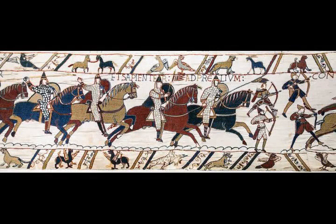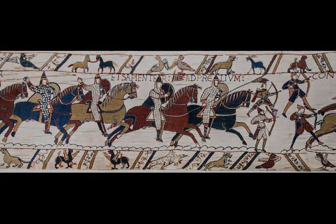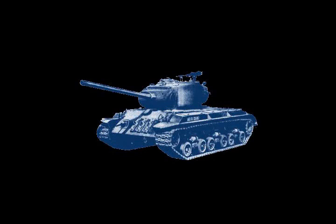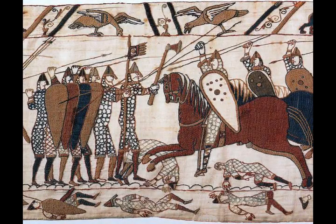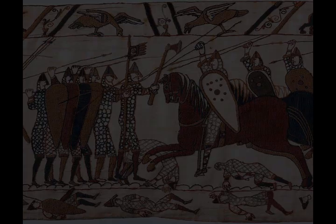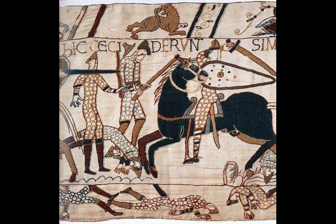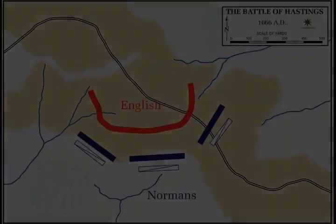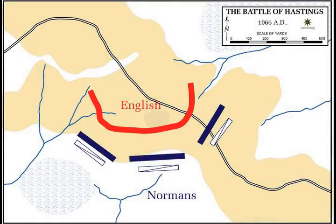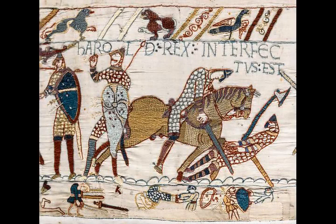Harold had spent mid-1066 on the south coast with a large army and fleet waiting for William to invade. The bulk of his forces were militia who needed to harvest their crops, so on the 8th of September Harold dismissed the militia and the fleet. Learning of the Norwegian invasion he rushed north, gathering forces as he went, and took the Norwegians by surprise, defeating them at the Battle of Stamford Bridge on the 25th of September. Harald Hardrada and Tostig were killed, and the Norwegians suffered such great losses that only 24 of the original 300 ships were required to carry away the survivors. The English victory came at great cost, as Harold's army was left in a battered and weakened state, and far from the south.